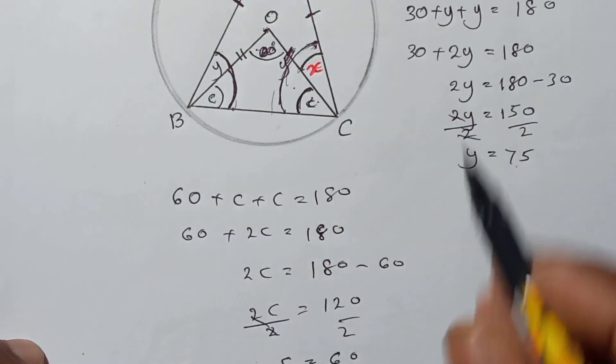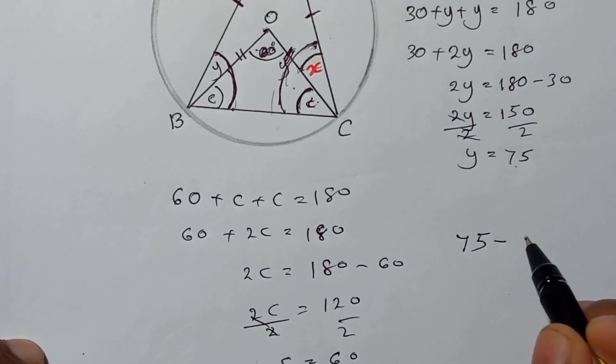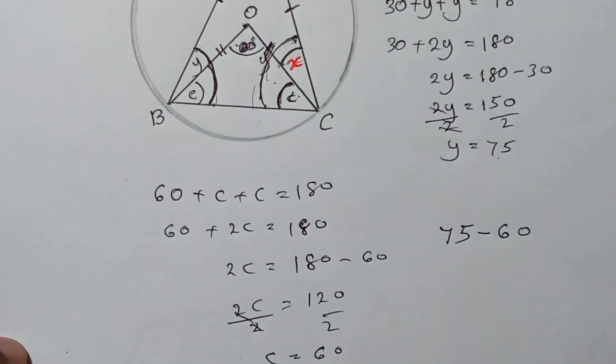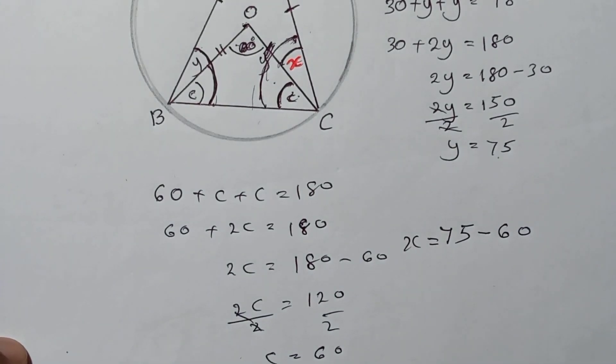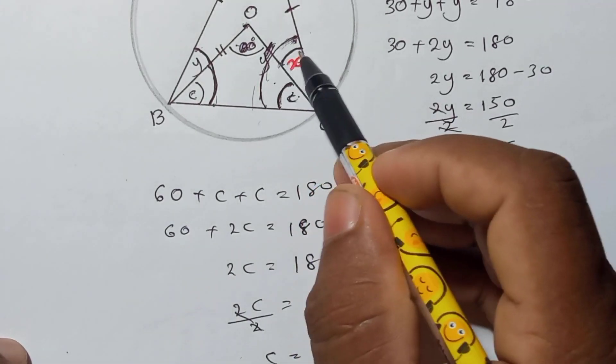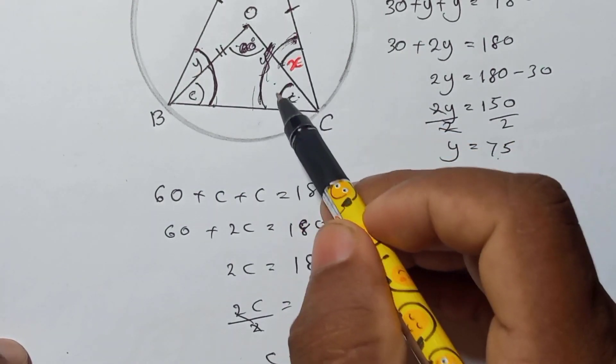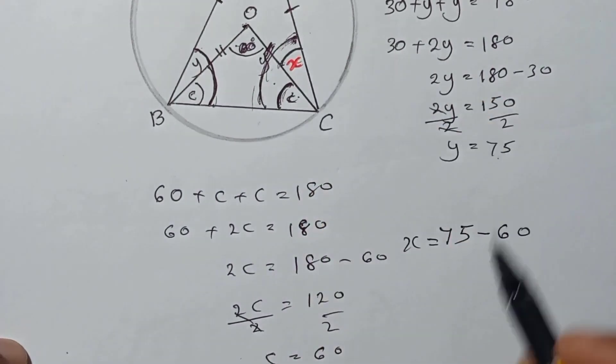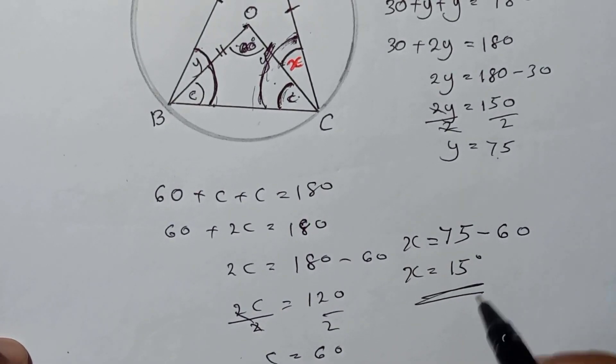Now get to x. What we need to do? From this bigger angle subtract this one, that means 75 subtract 60. It will be equal to the angle of x. This angle, this small one, will be equal to from this angle, this bigger one, subtract this one. So here x equals 15. X equals 15 degrees.